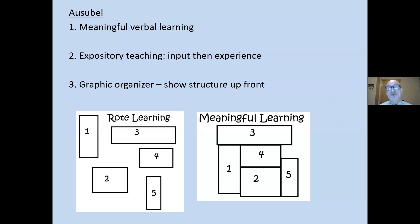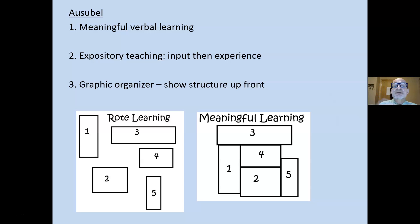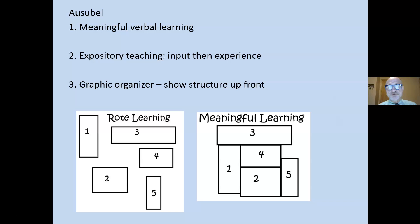Ausubel is known for meaningful verbal learning — learning that's connected to something — versus rote learning, which is information not connected to anything. He is known for expository teaching, where you give the information first and then provide an experience or activity to reinforce that input. He was also known for structure and concept, and he used graphic organizers. Specifically, he used an advance organizer — a graphic organizer shown in advance of the lesson or assigned reading that shows the structure of what is to be learned.